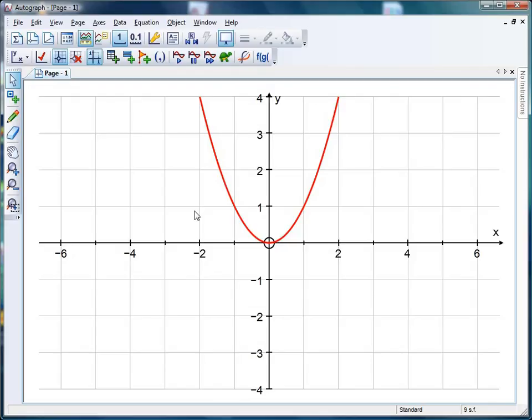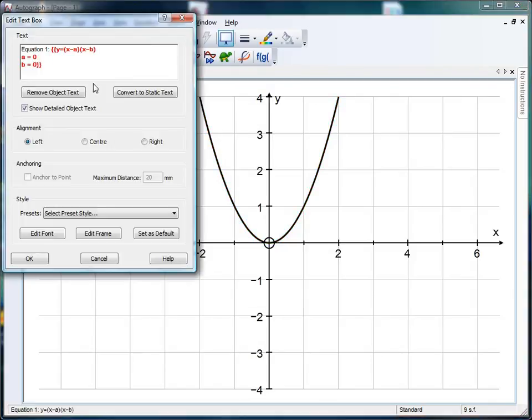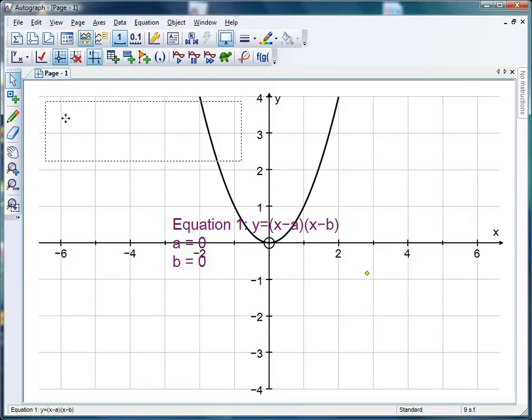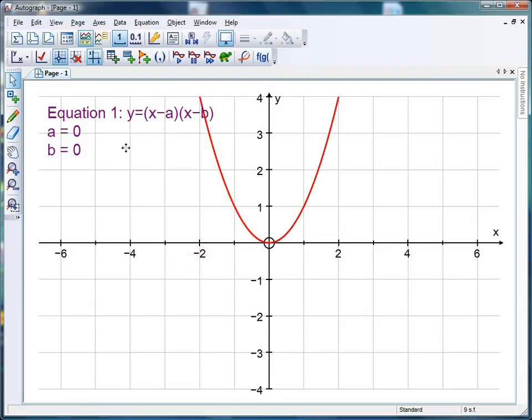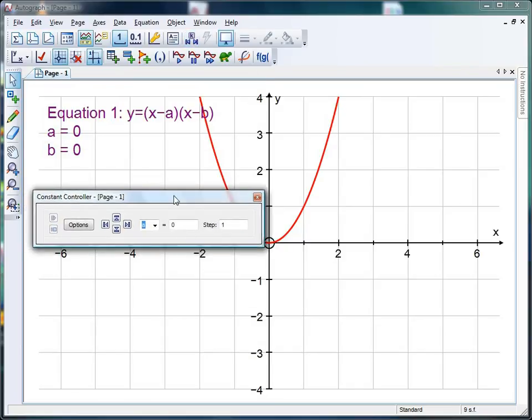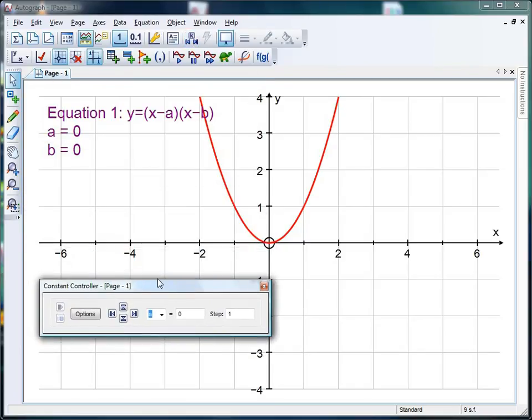Fingers crossed we should get our graph of y equals x squared. I've left my slow plot on so I'll just click that to speed up the process. There it is. Now what I can do is click on that graph, click on my text box there, click OK, and that's going to keep track of the current values of the constants for me. I'm also going to get my constant controller.